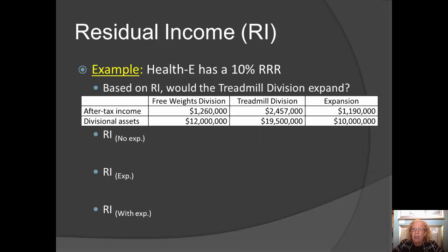Let's look at Health E. In the previous section, we found that the treadmill division manager faced a moral hazard because the division's ROI was lower with the expansion than without it, so the treadmill manager would choose not to expand. Let's see if the same thing is true when the division manager is evaluated based on residual income instead of ROI. Health E has a 10% required rate of return, either to satisfy the board and shareholders or because that's the cost of capital for these assets.